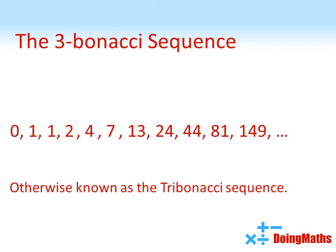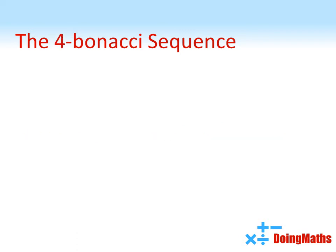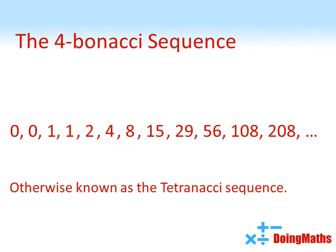Now this is also known as the Tribonacci sequence. We can do a very similar thing to create the four-Bonnacci sequence. This time we'll start with two zeros and two ones, and we add four terms together to get the next. So we add these four together to create the next term, which is two. Then add the two ones and the two together to create four, and so on — adding four terms together to give us the next one. This is also known as the Tetranacci sequence.